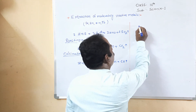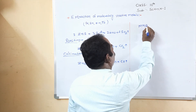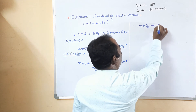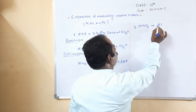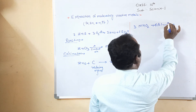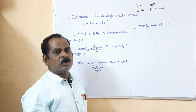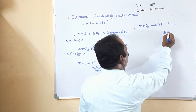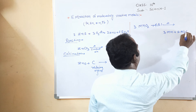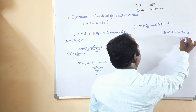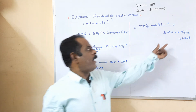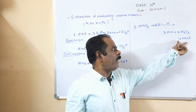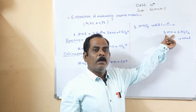For example, manganese dioxide (MnO2). How do we extract manganese from manganese dioxide? Manganese is extracted using aluminium powder. When manganese oxide is strongly heated with aluminium, the aluminium acts as a reducing agent and we get manganese plus aluminium oxide (Al2O3). In this process, a large amount of heat is evolved, and the obtained manganese is in the molten state.